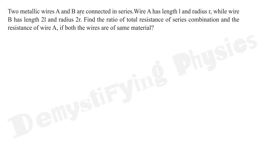Two metallic wires A and B are connected in series. Wire A has length l and radius r, while wire B has length 2l and radius 2r. Find the ratio of total resistance of the series combination to the resistance of wire A, given that both wires are made of the same material.